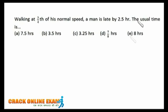Now try this one mentally without paper and pen: walking at three-fourths of normal speed, a man is late by 2.5 hours. What is the usual time? If speed is three-fourths, time is four-thirds — that's one-third extra. That one-third extra equals 2.5 hours, so the usual time is 7.5 hours.